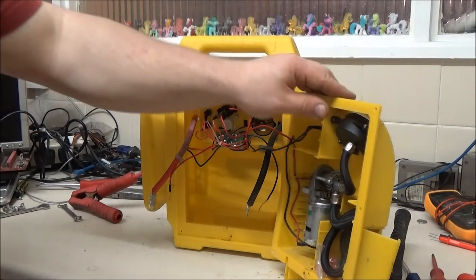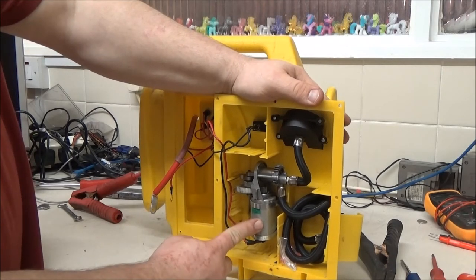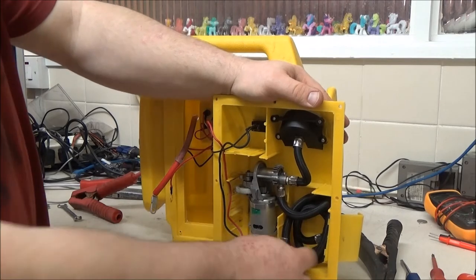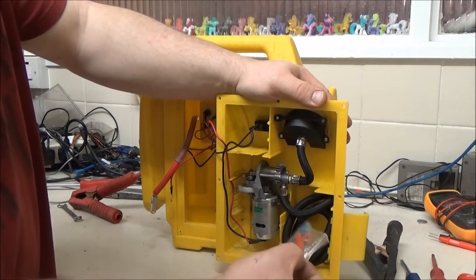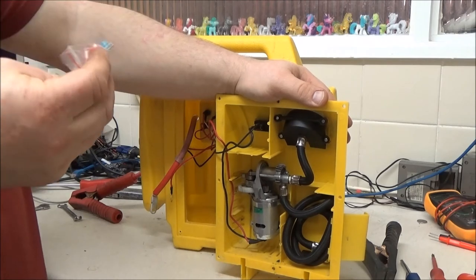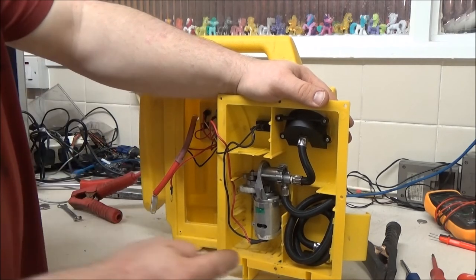Right, so basically on the back of this we've got all the air compressor gubbins. You know, we've got the motor that runs it and the little piston up here, and the hose. Oh, we've still got all the attachments as well. Yep. So, air bed attachments and a football attachment right there. Let me put that back.